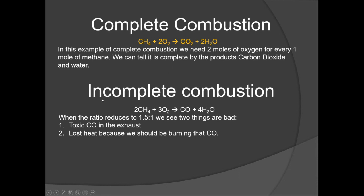Now with incomplete combustion: if we have two parts methane and three parts oxygen, the products are going to be carbon monoxide and water. The difference between the first and second equation is the ratio of fuel to oxygen. In the first it's two to one; reducing to lowest common denominators, this second case is one and a half to one — one and a half parts oxygen to one part fuel. By taking away a little bit of that oxygen, we end up with toxic carbon monoxide as a product in the exhaust, and also heat loss, because carbon monoxide and hydrogen are both combustible by themselves. These flammable gases going up the stack could lead to an explosion.